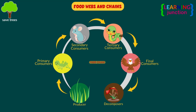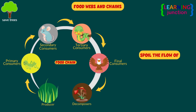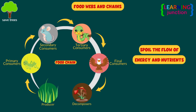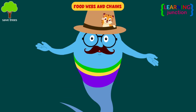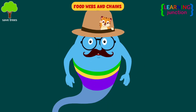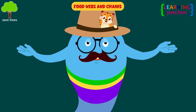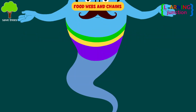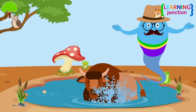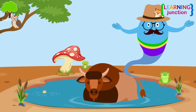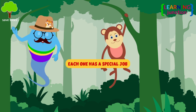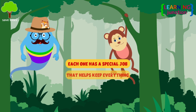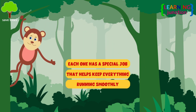Food webs and chains. If an animal is removed from the food chain, it will spoil the flow of energy and nutrients in the ecosystem. As a result, the organisms that depend on others for food will die due to starvation. Animals are like workers in nature's big factory. Each one has a special job that helps keep everything running smoothly.